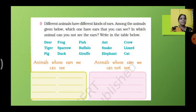Next, different animals have different kinds of ears. Among the animals given below, which one have ears that you can see? In which animal you cannot see the ears? Write in the table below. So these are the animal's names which we can see, you have to write in separate table and which we can't see, you have to write in the separate table.